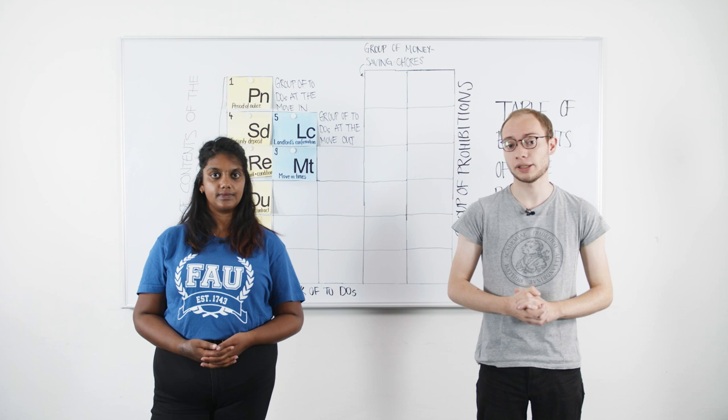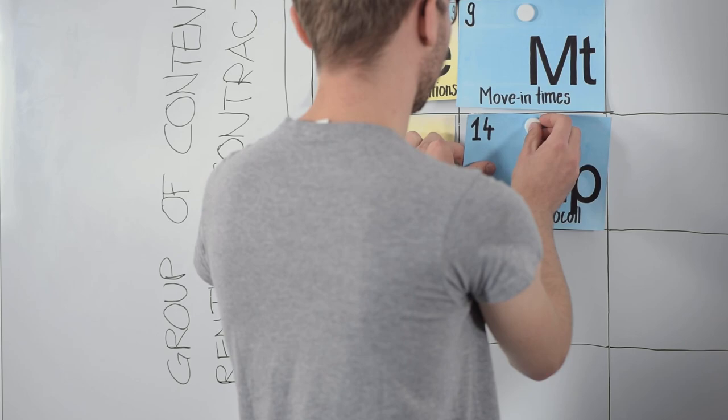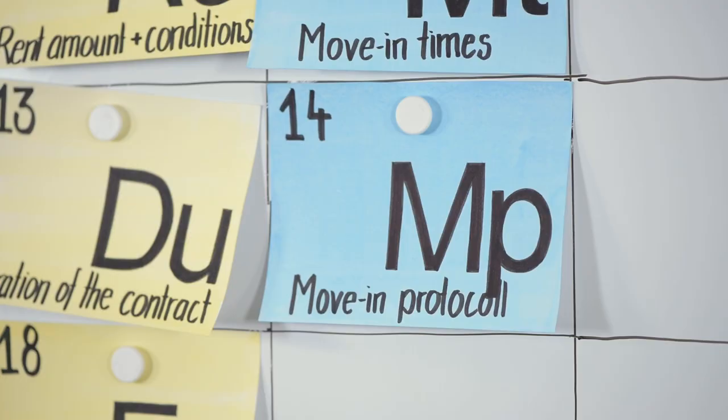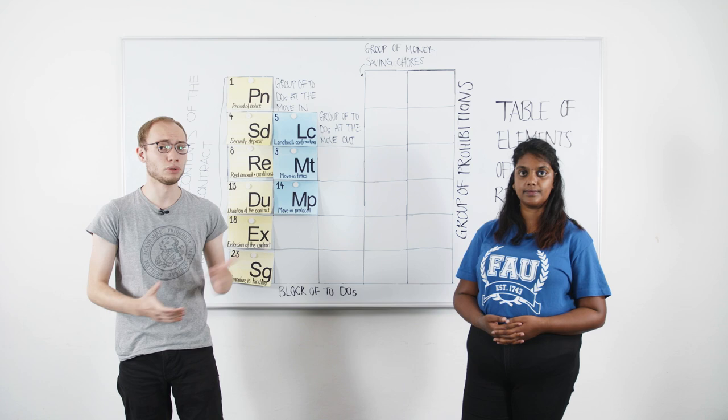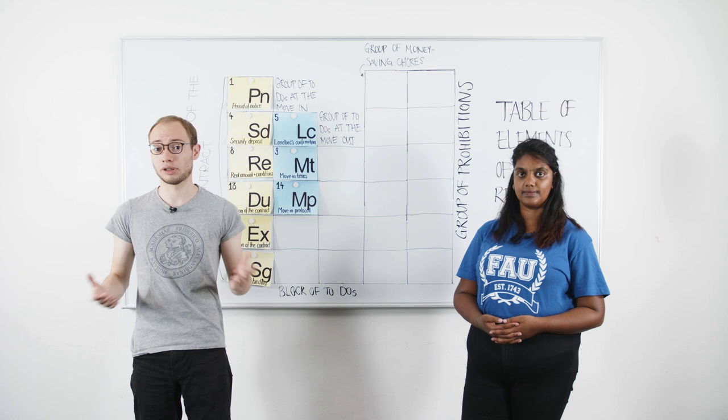Third important thing while moving in: make sure the condition of your accommodation is documented in a move-in protocol. The protocol should state everything that's not perfectly in order. When you move out, the protocol proves it wasn't you who caused the damage. Ask your landlord or caretaker—they'll usually know what needs to be in the protocol.